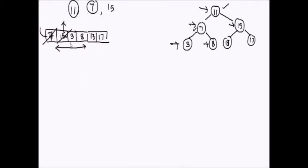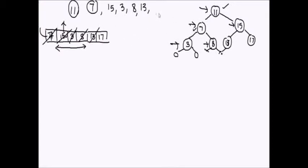Now we take another element from the data structure and print it. Are there any left or right children of 3? No, so we move forward. We take another one — 8. Are there any children? No. So we move forward, take out 13, print it — no children. Then we print 17. This completes our level order traversal of the tree.